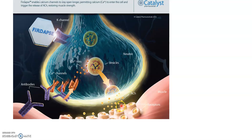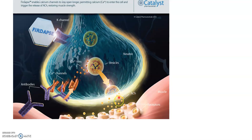This diagram shows acetylcholine binding to receptors on the muscle. We have vesicles, calcium ions, calcium channels, and antibodies. Antibodies can act upon acetylcholine receptors in certain medical conditions — we'll discuss that later. The image also shows the potassium channel, with the main focus being on acetylcholine.